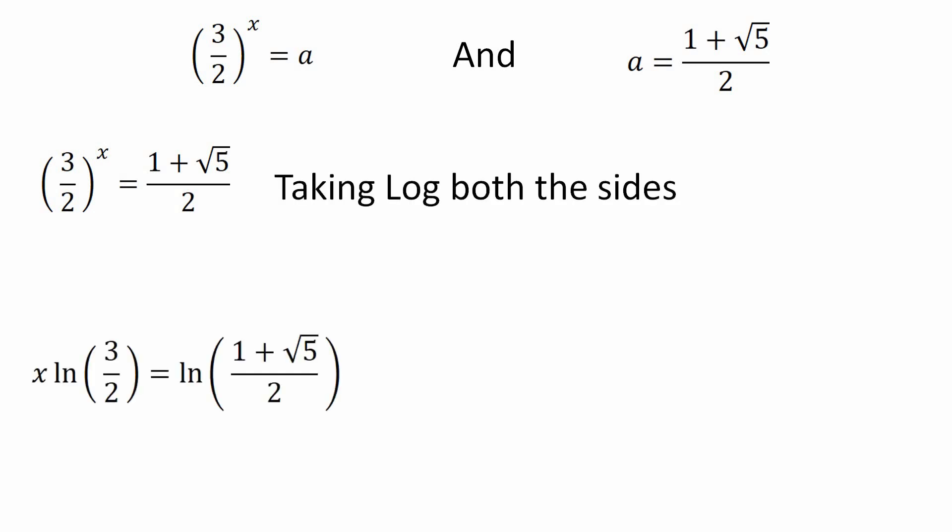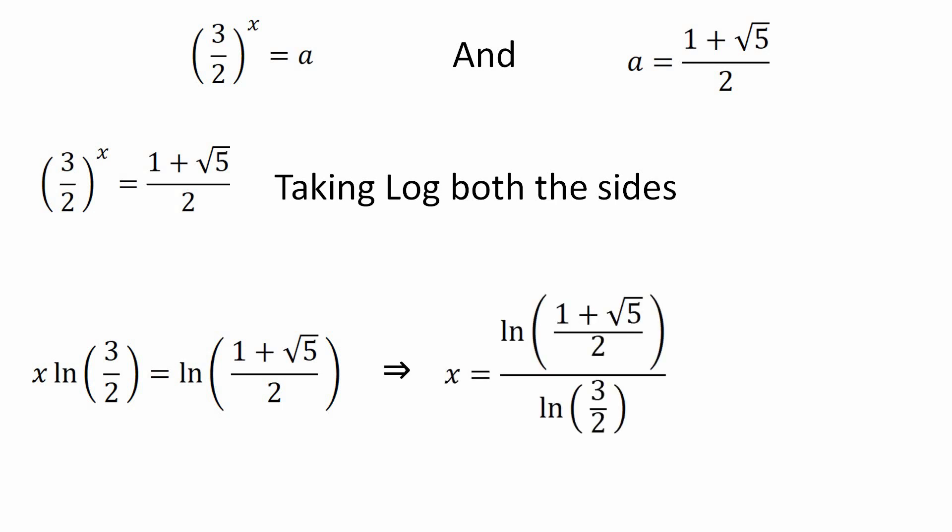Taking natural log on both sides: x · ln(3/2) = ln((1 + √5) / 2). On further simplification: x = ln((1 + √5) / 2) / ln(3/2). Evaluating both numerator and denominator gives x approximately equal to 1.187.